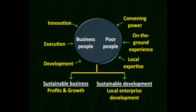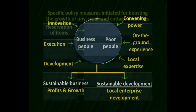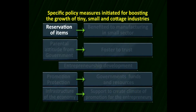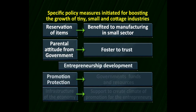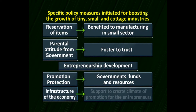The new model of the double bottom line — where sustainable business and sustainable development coexist — is discussed here. Reservation for items required by industry has to be done so that small-scale manufacturing sectors are benefited. We need a parental attitude from the government to foster trust, entrepreneurship development promotion, protection and funds from the government, and an infrastructure that supports a climate of promotion for entrepreneurs.